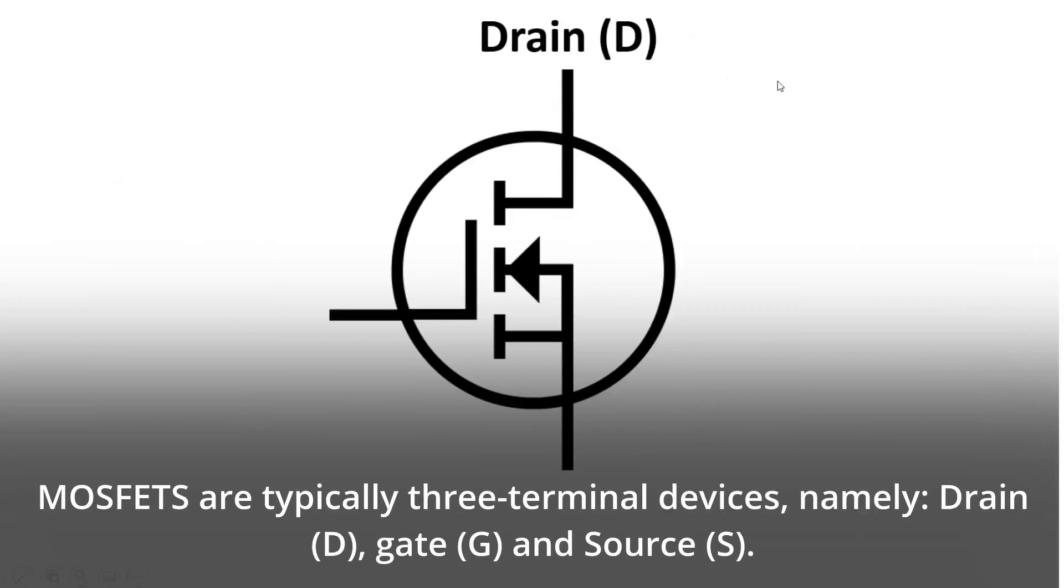MOSFETs are typically three terminal devices, namely drain (D), gate (G), and source (S).